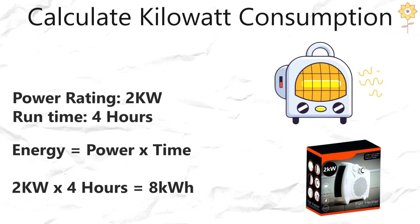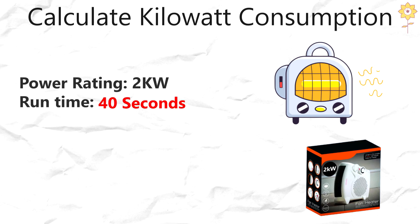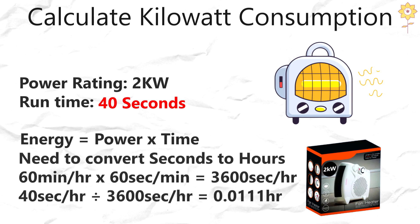What happens though if the heater only runs for 40 seconds? Although we are charged in kilowatt hours, we can still use the energy calculation — we only need to convert seconds to hours. There are 60 seconds in a minute and 60 minutes in an hour, so 60 times 60 equals 3,600 seconds per hour. Dividing 40 seconds by 3,600 gives a run time of 0.011 hours.